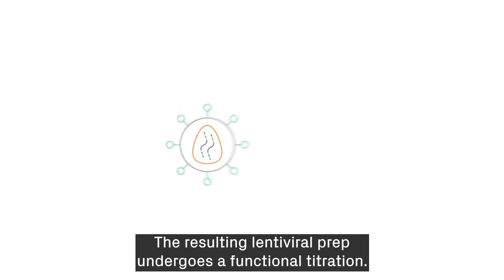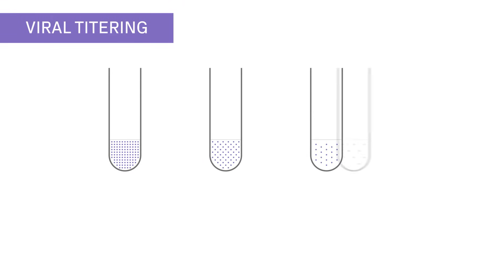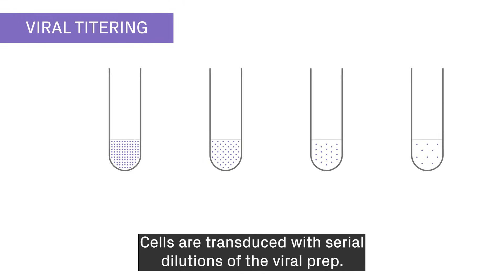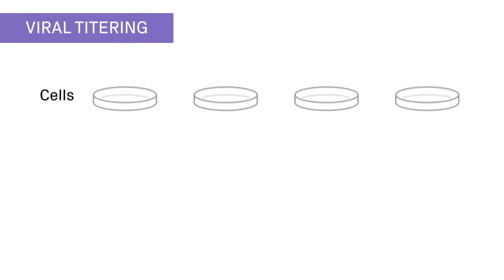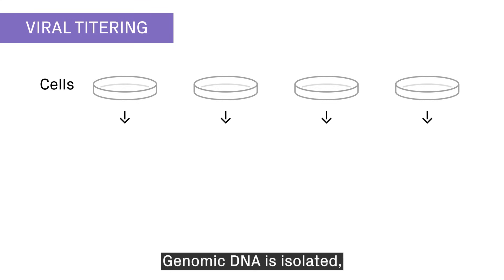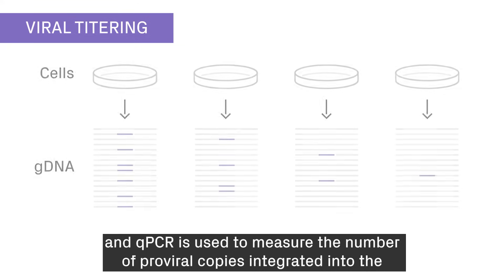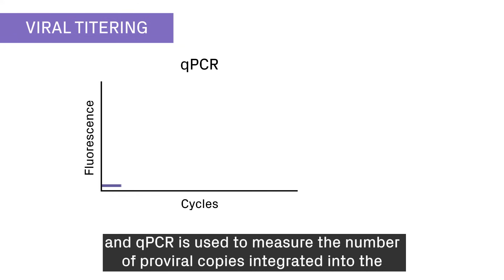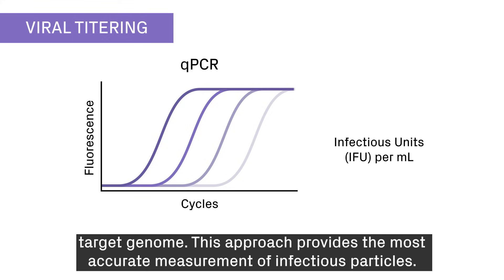The resulting lentiviral prep undergoes a functional titration. Cells are transduced with serial dilutions of the viral prep. Genomic DNA is isolated and qPCR is used to measure the number of proviral copies integrated into the target genome. This approach provides the most accurate measurement of infectious particles.